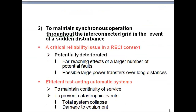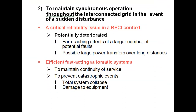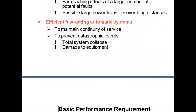The second essential reliability issue is to maintain synchronous operation throughout the interconnected grid in the event of sudden disturbances. If any sudden disturbance occurs, we have to maintain normal operation of the grid. There exists a critical reliability issue in a RECA context — potentially deteriorated, far-reaching effects of a larger number of potential faults, possible large power transfers over long distances, and efficient fast-acting automatic systems to maintain continuity of services and prevent catastrophic events such as total system collapse or damage to equipment.